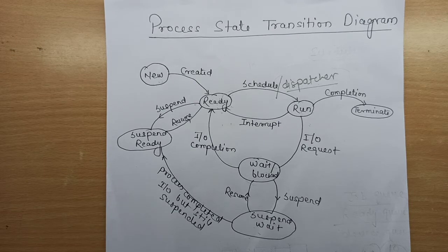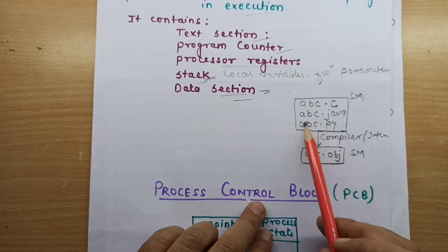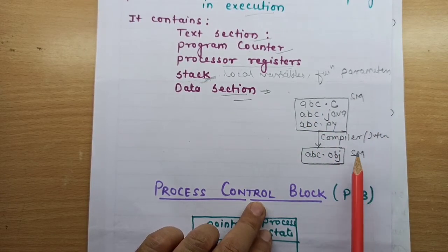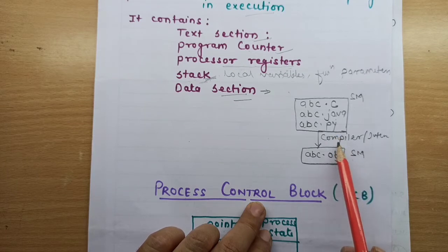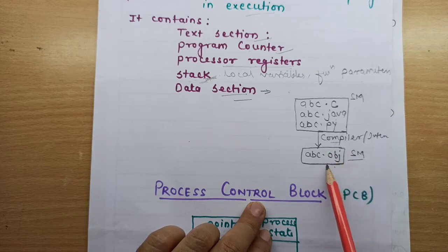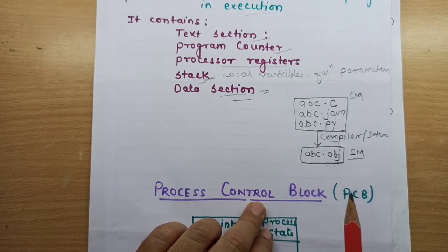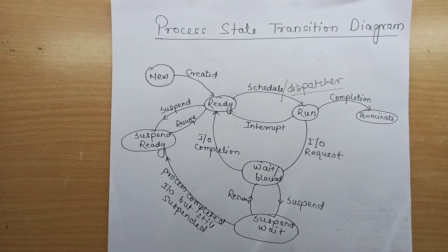The first state is the new state, when a process is being created. The source code is compiled to object code and stored in secondary memory. When the program starts execution, it enters the new state but is still in secondary memory. The new state defines that the process is being created and is stored in secondary memory, waiting for the scheduler to pick it up and give it space in main memory.